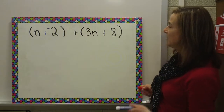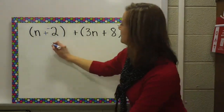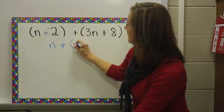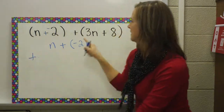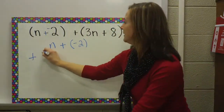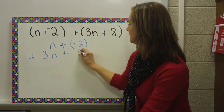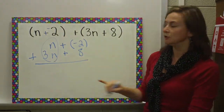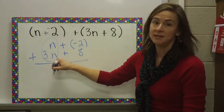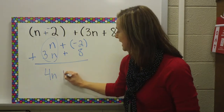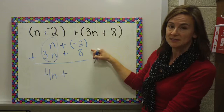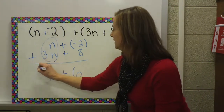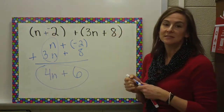Then it says to line up the problem vertically. So I have N and a negative two, plus I'm going to take this expression and line it up — three N's and a positive eight. So I combine my like terms. I have one N here and three N's here, that means I will have four N's. And I have a negative two and a positive eight, so I have different signs — I find the difference. My final answer is four N plus six.